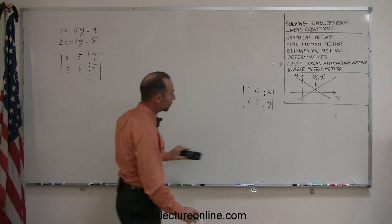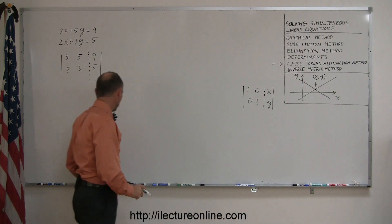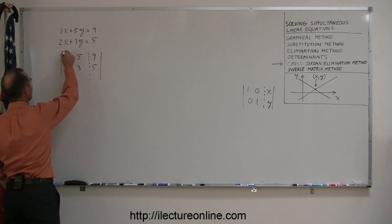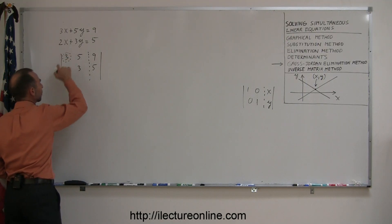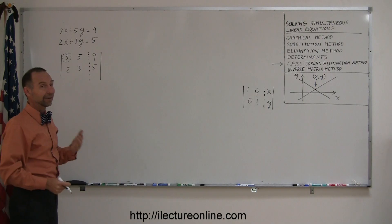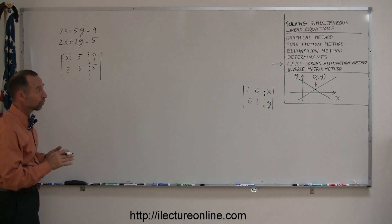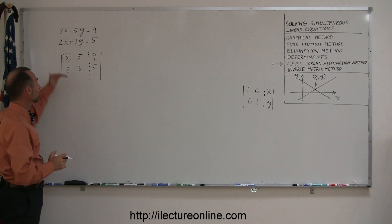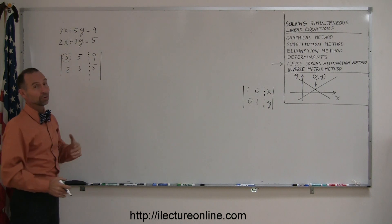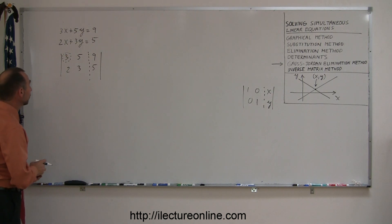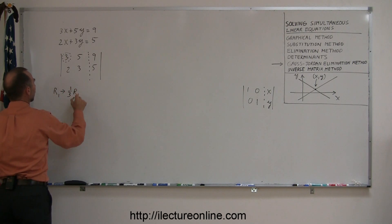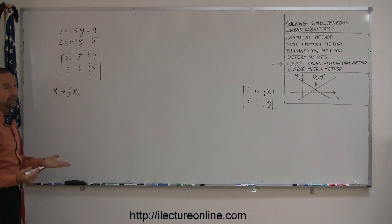To do that you must go through various steps to turn this into that. You always start with the upper left corner, and the first thing you want to do is turn this 3 into a 1. You can do that by simply taking the whole first row and dividing it by 3. Remember, whenever you use the Gauss-Jordan elimination method, you must do exactly the same thing to everything in the same row. So we're going to take the first row and replace it by one-third of the first row.